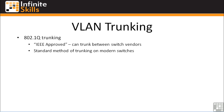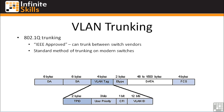802.1Q trunking works very differently than ISL. Instead of encapsulating the entire frame, there is a portion of the Ethernet frame that is the VLAN tag, and within that VLAN tag you have priority, the VLAN ID, and so forth. The entire Ethernet frame is not re-encapsulated like it is with ISL — there's no separate header or footer. The switch manipulates the VLAN tag, recomputes the checksum, and sends it across the 802.1Q link. The receiving switch looks at the VLAN ID, verifies the frame checksum, and dumps the frame onto the correct VLAN.